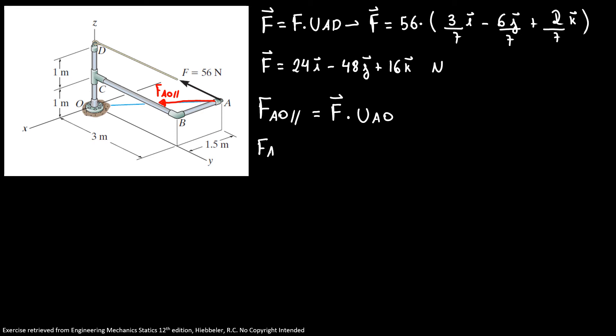So I have my force along AO is 24 I minus 48 J plus 16 K, and my unit vector AO is 3 over 7 I minus 6 over 7 J minus 2 over 7 K. To process my dot product, I have I times I, that is 24 times 3 over 7, plus J times J minus 48 times negative 6 over 7.